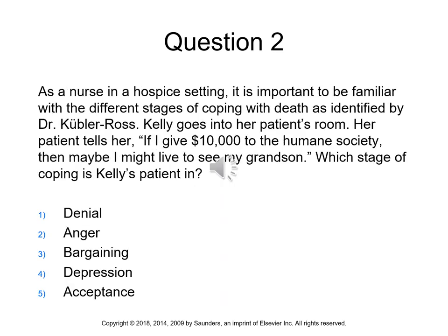Question two: As a nurse in a hospice setting, it is important to be familiar with the different stages of coping with death as identified by Dr. Kubler-Ross. Kelly's patient tells her, 'If I give $10,000 to the Humane Society, then maybe I might live to see my grandson.' Which stage of coping is Kelly's patient in? The answer is three — bargaining. Bargaining is the stage in which the patient believes that if I'm good, then I can get a reward.